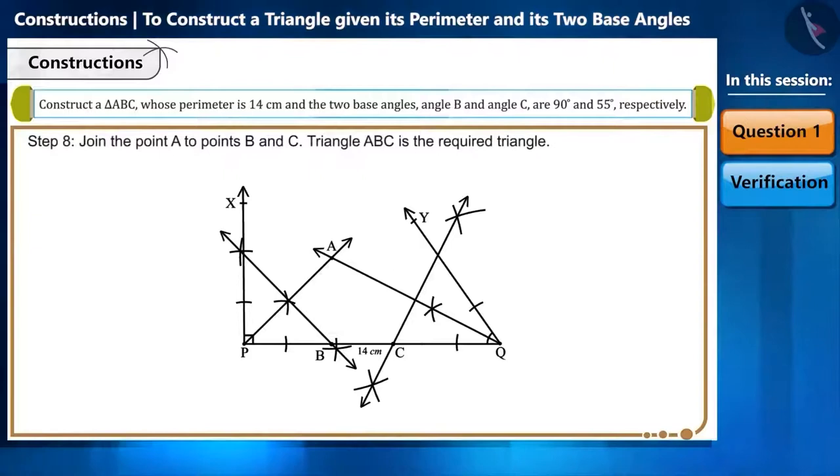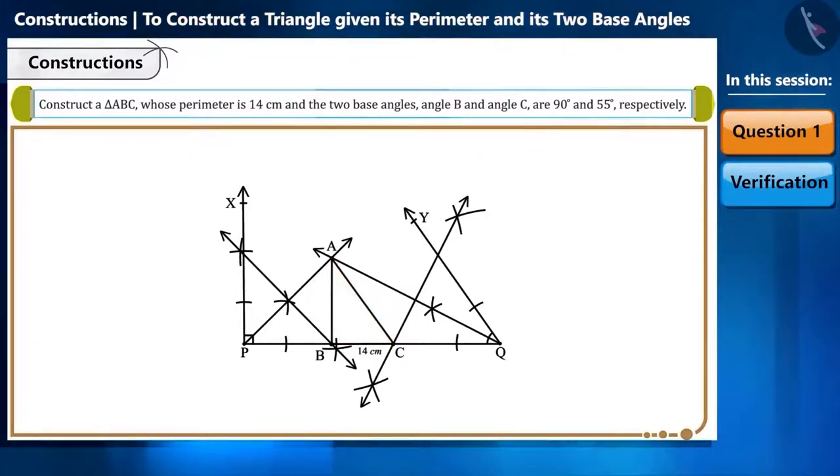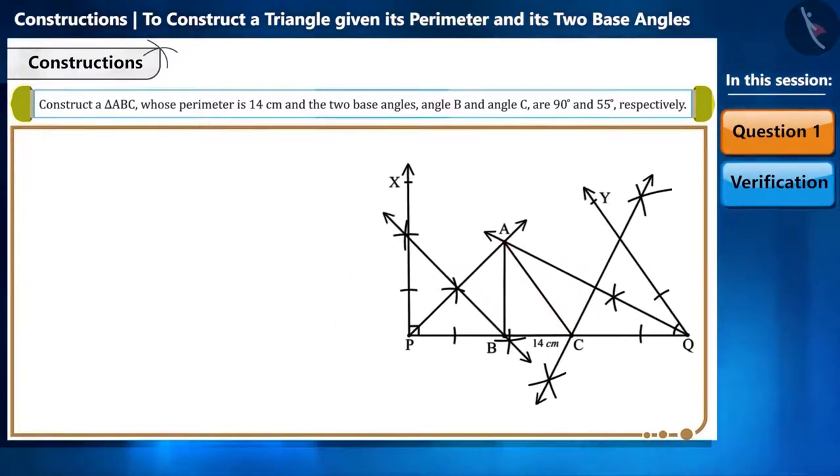Step 8: Join point A to point B and to the point C. Friends, the triangle ABC thus obtained is the expected triangle we wanted to construct. And thus we can easily construct a triangle for any given perimeter and base angles by following these steps.